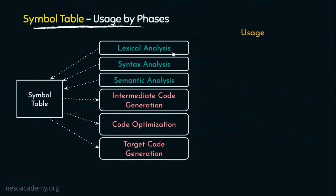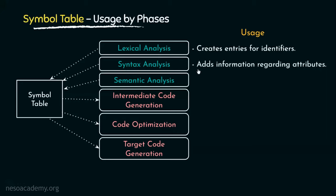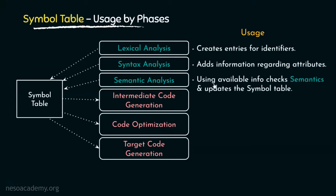Coming to lexical analysis, it creates entries for identifiers. The lexical analyzer, known as the scanner, scans the entire source code line by line, and during that scanning, whenever it encounters any identifier it creates an entry for that inside the symbol table. Coming to syntax analysis, the syntax analyzer adds information regarding attributes like type, scope, dimension, line of reference, line of usage, etc. During semantic analysis, the semantic analyzer uses the available information stored in the symbol table to check the semantics of the identifiers and updates the symbol table accordingly.